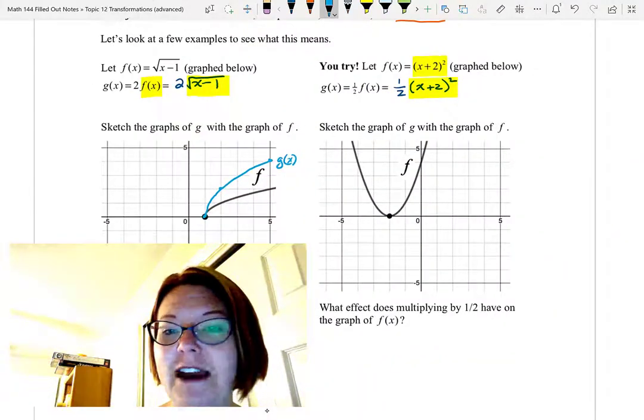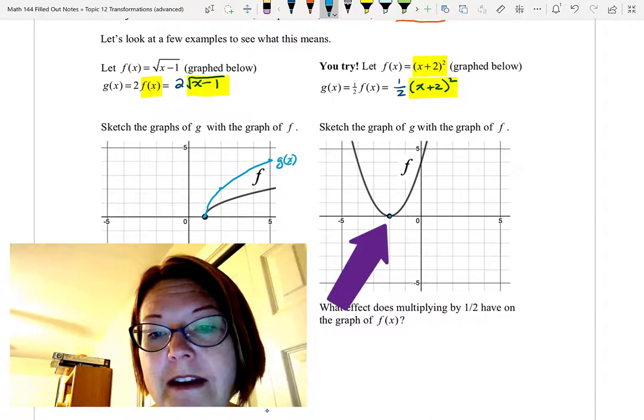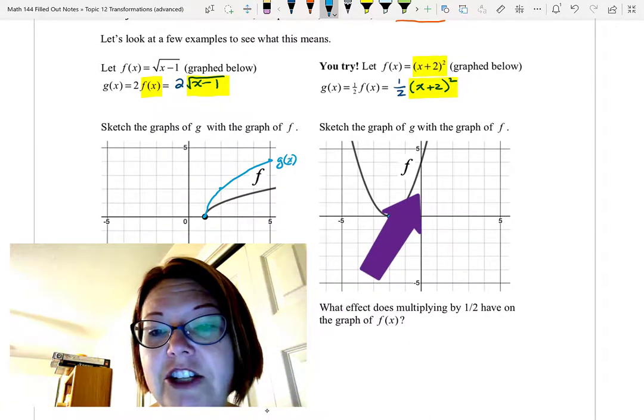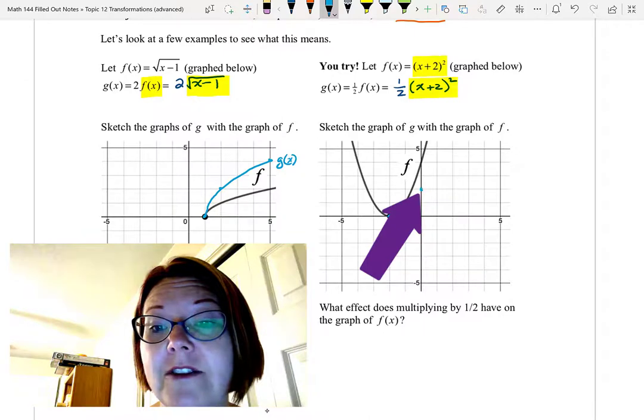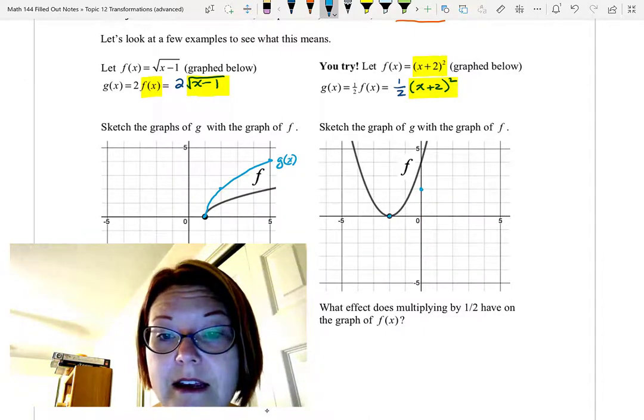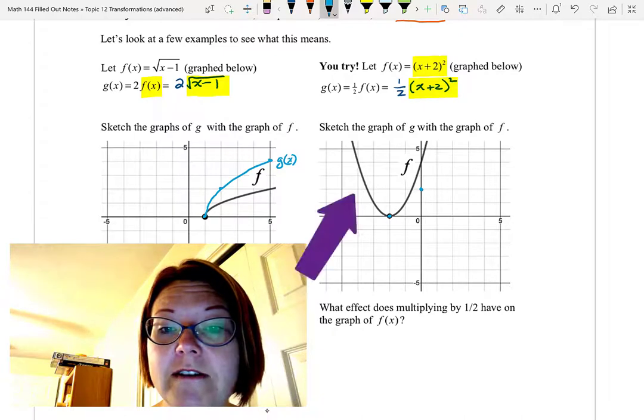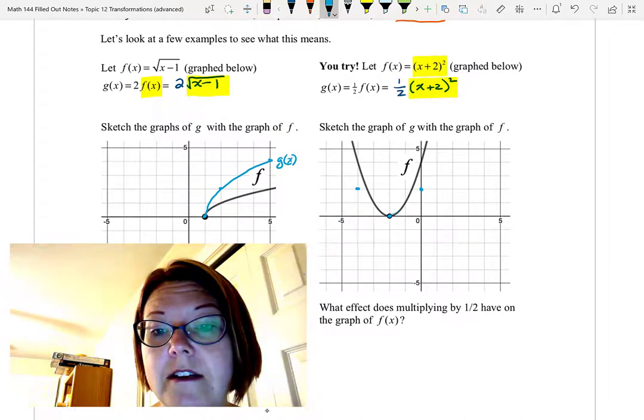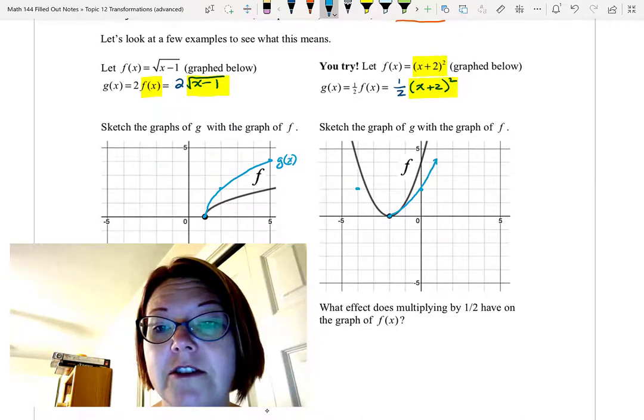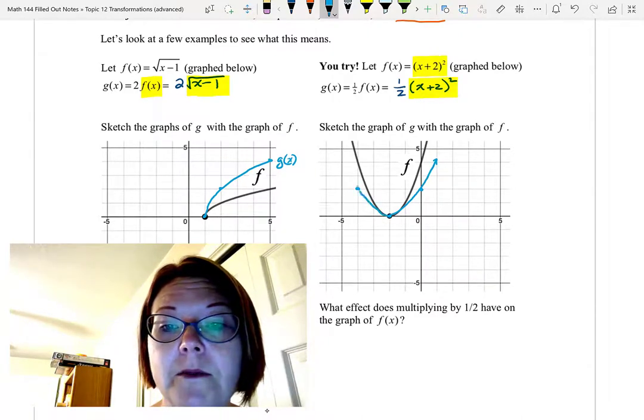Let's go back and sketch that graph. We still have the point negative 2, 0. g(x) will have a point at 0 comma 2, and since f(x) had a point at negative 4, 4, g(x) will have a point at negative 4, 2. This should be sufficient to sketch a graph of the new parabola.